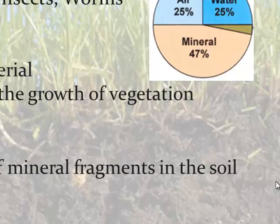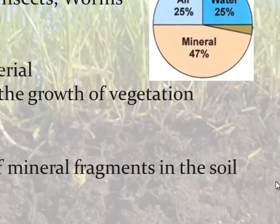All soil comes from what we call parent rock. Parent rock is basically the rock that makes up that particular type of soil. All across the United States, all over the world, soil is different, and it's all based on what kind of rock is found in that particular area. Because all soil is, is weathered rock, weathered mineral fragments, and then the humus, the air, the water, and living things that are in that area.